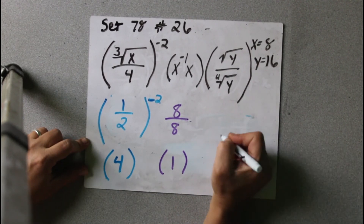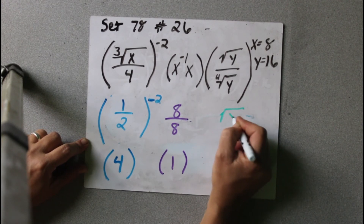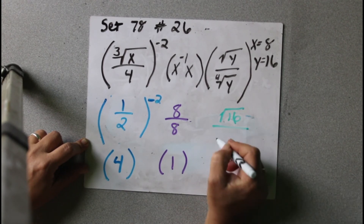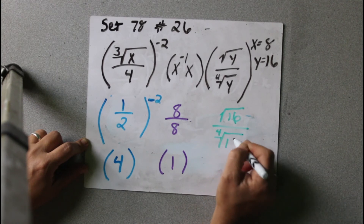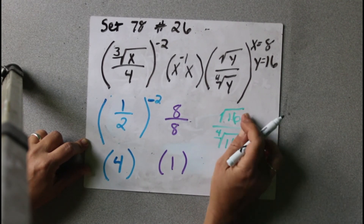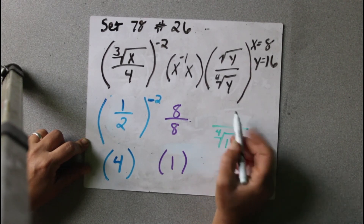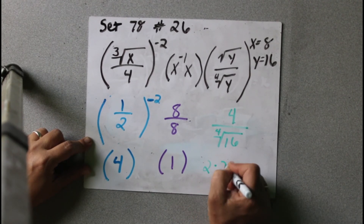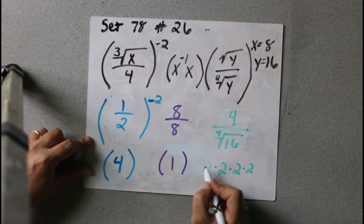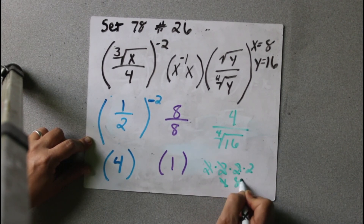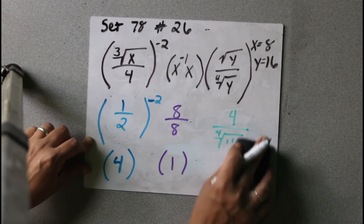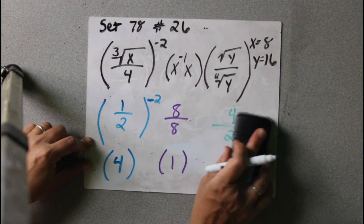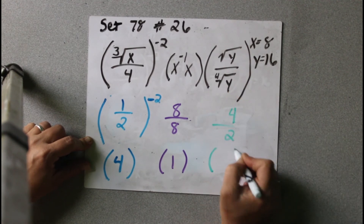Now we're going to do this last part: the square root of y over the fourth root of y. And y is 16. So the square root of 16 over the fourth root of 16. The square root of 16 is 4, because 4 times 4 is 16. The fourth root of 16 is 2, because 2 times 2 is 4, times 2 is 8, times 2 is 16. So we have 4 over 2, which is 2. So the whole last part simplifies to 2.